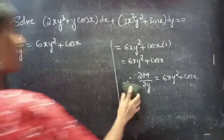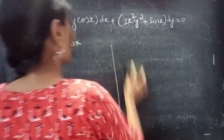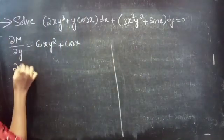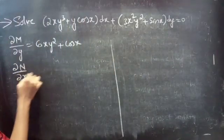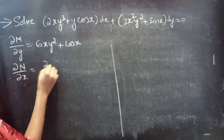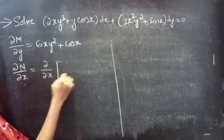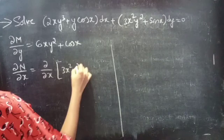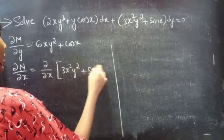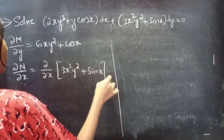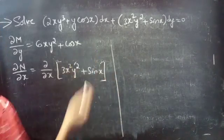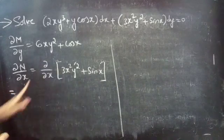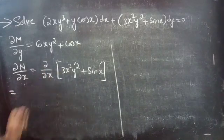Now, we will find the partial derivative of N with respect to x. ∂N/∂x equals to ∂/∂x of (3x²y² + sin x). Here, y² is treated as constant, since we are doing the partial derivative with respect to x.